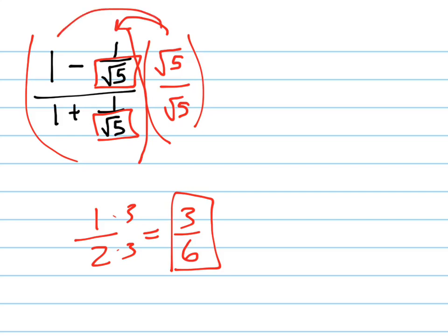And when I do that, make sure I distribute it to both terms in the top and bottom, and I'm going to get root 5 times 1, which is root 5, minus 1, and on the bottom, I'm going to get root 5 plus 1.